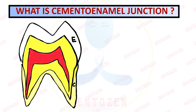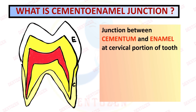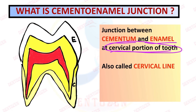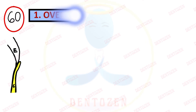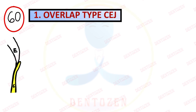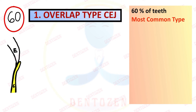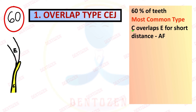Now let's see how to write for an exam. The cementoenamel junction is the junction between cementum and enamel at the cervical portion of the tooth, also called the cervical line. It is variable, with three different types: overlap, edge-to-edge, and gap junction.